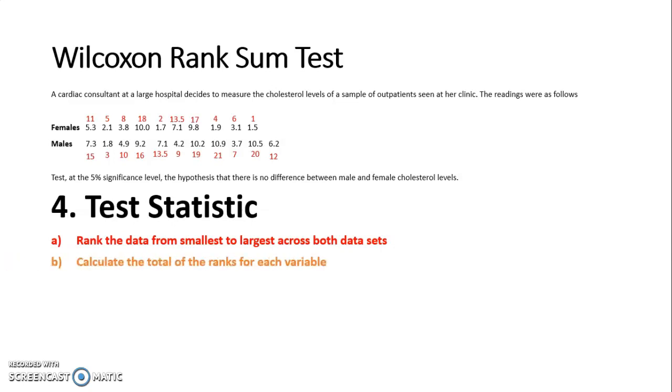The next step is to calculate the total of the ranks for each variable. For females I'm going to add up all the ranks: 11 plus 5 plus 8 plus 18 plus 2 plus 13.5 plus 17 plus 4 plus 6 plus 1, which gives 85.5. Then I do the same for males, adding the red ranks, and that gives me 145.5.